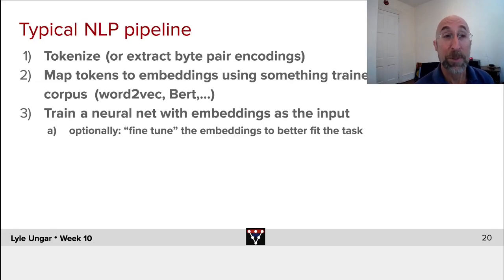So, typical NLP pipeline. First of all, you tokenize or extract the byte-pair encodings, and I'll use those terms sort of interchangeably. Then you map these tokens to some sort of an embedding, either context-oblivious, context-free like Word2Vec, or context-sensitive like BERT. These are trained on huge billions of words corpora.